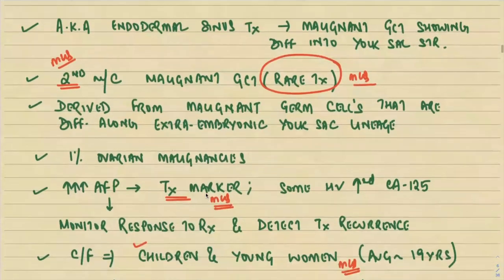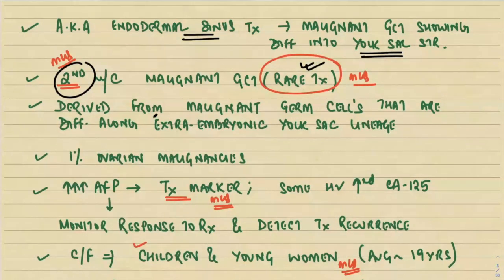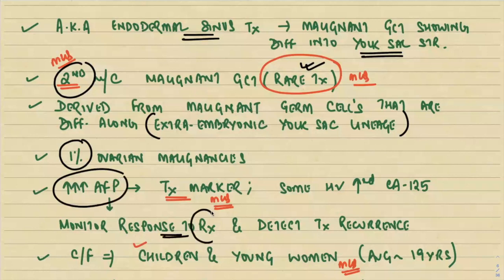The second important germ cell tumor is the yolk sac tumor, also called endodermal sinus tumor. It is a malignant germ cell tumor showing differentiation towards yolk sac structures. Although rare, it is the second most common malignant germ cell tumor after dysgerminoma. It is derived from malignant germ cells differentiating along extra-embryonic yolk sac lineage, comprising only one percent of all ovarian malignancies. The most important tumor marker is alpha-fetoprotein (AFP), used to monitor treatment response and detect recurrence.